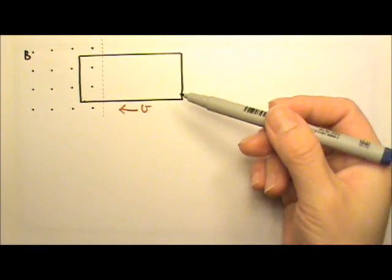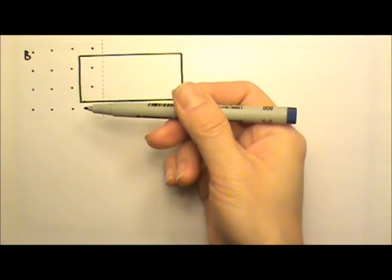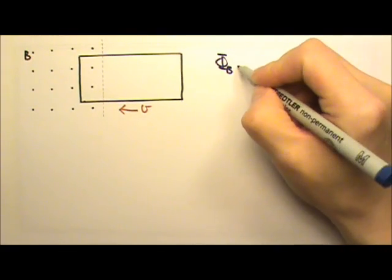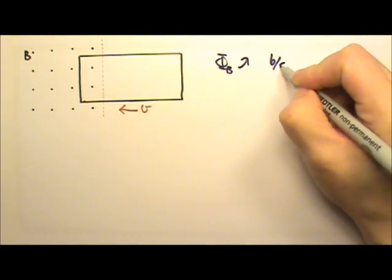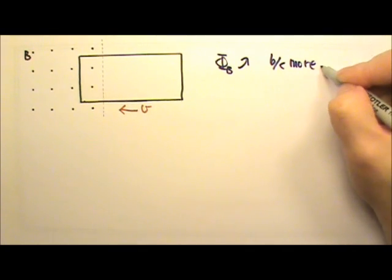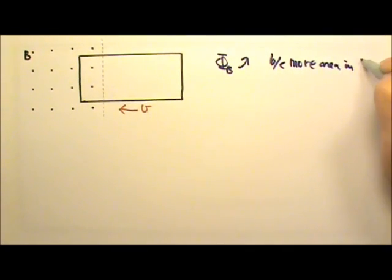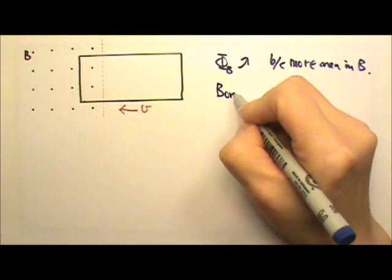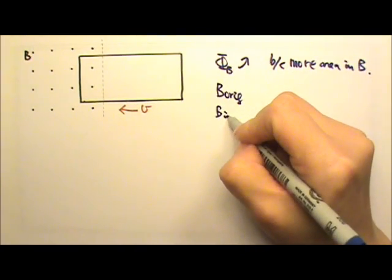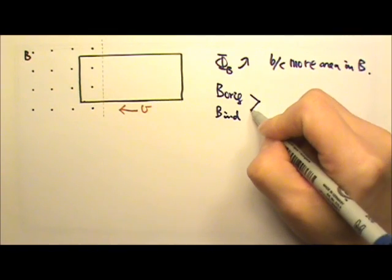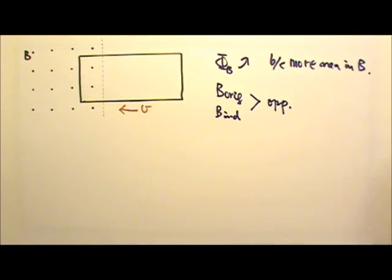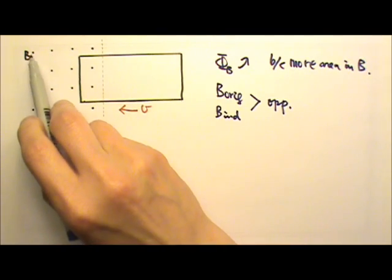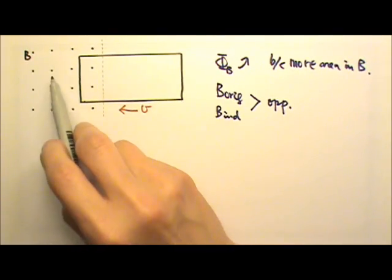The wire loop is being pushed into the magnetic field, so the flux through the loop is increasing because we are getting more area in the magnetic field. This means the original magnetic field and the induced current's magnetic field must be in opposite directions. The original magnetic field is coming out of the paper.